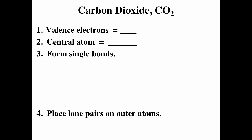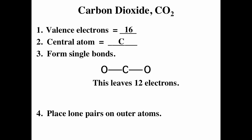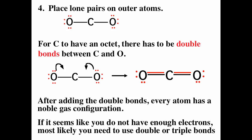For CO2: carbon is in the fourth column with four valence electrons; oxygen is in the sixth column with six. Two times six plus four gives us 16 valence electrons. Assuming carbon is in the center, we try single bonds, which uses four electrons, leaving 12 to distribute as lone pairs. Each oxygen sees eight electrons — noble gas configuration — but the carbon only sees four valence electrons, not an octet. When you don't have noble gas configuration for everything, try double or triple bonds.